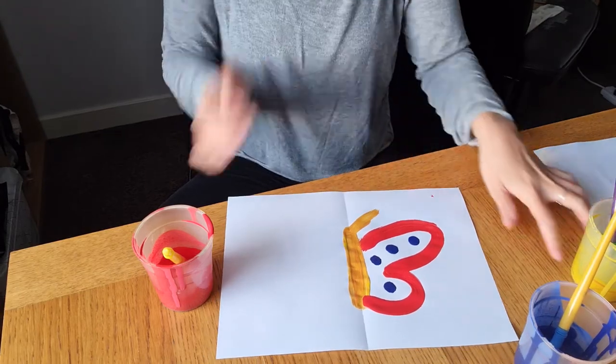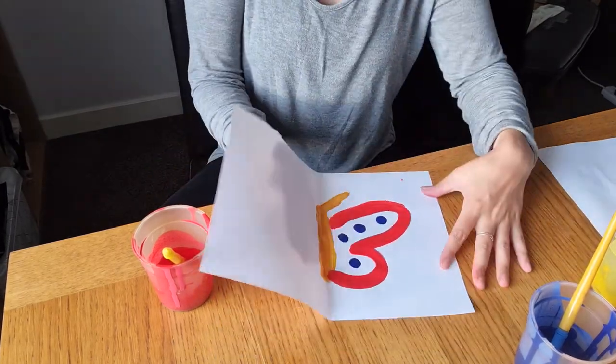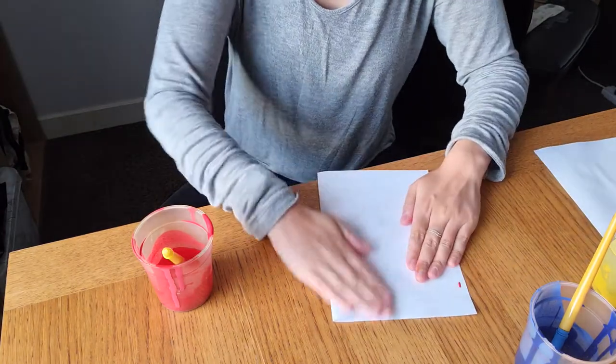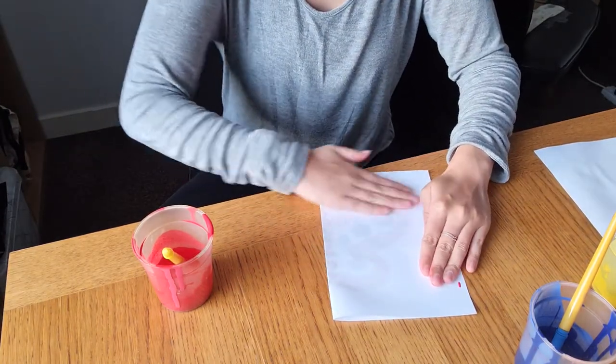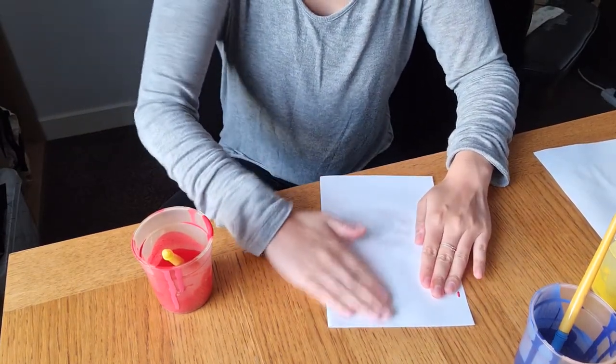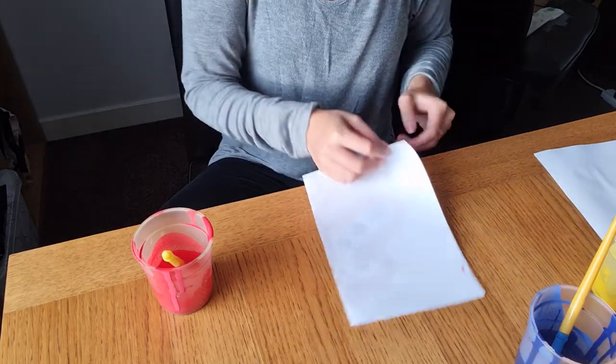That's me finished one side. Then I'm going to fold it in half, and then I can give it a little rub, just transferring the paint onto the other side. Then when you open it back up again, you should have your beautiful butterfly.